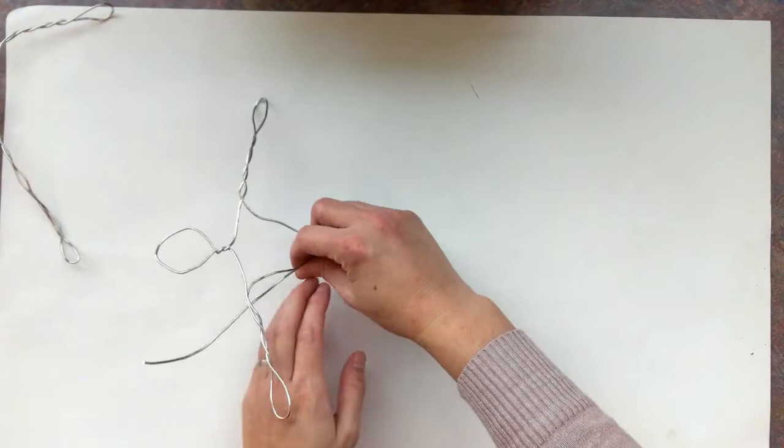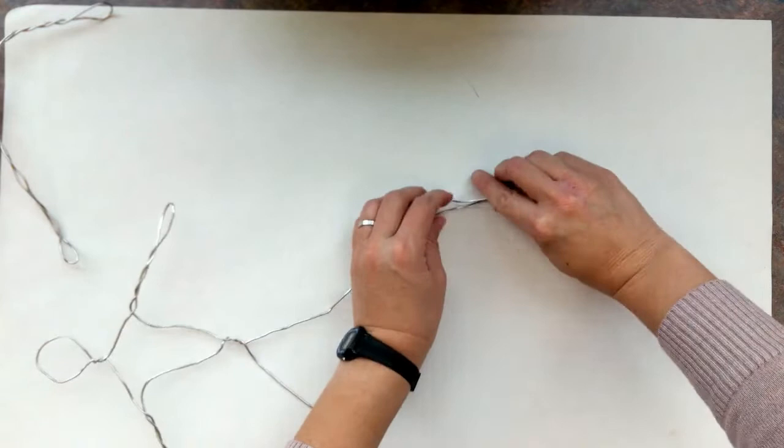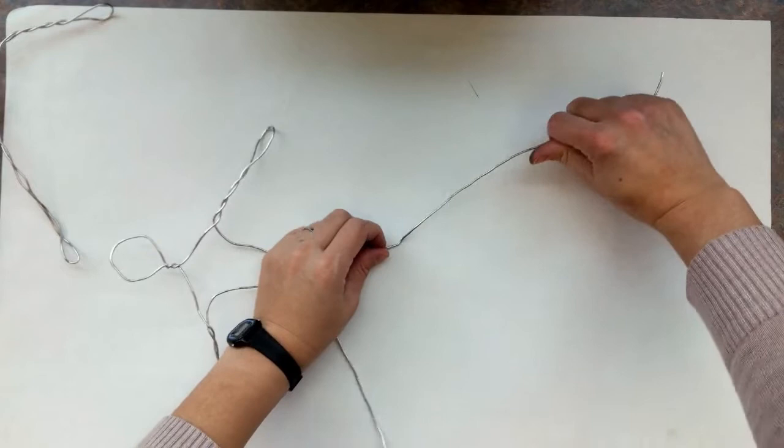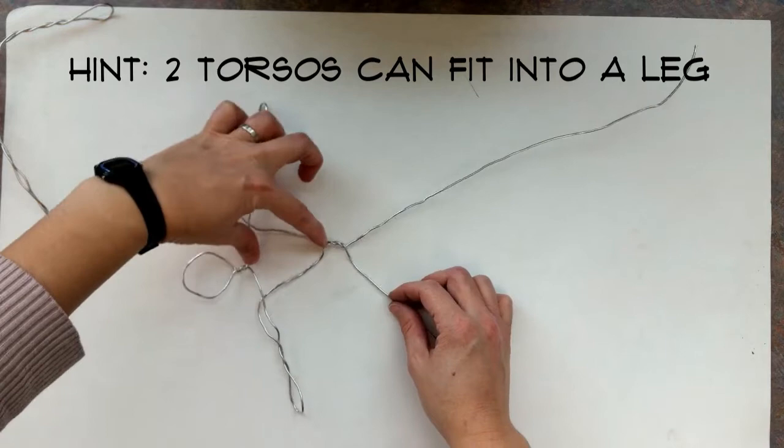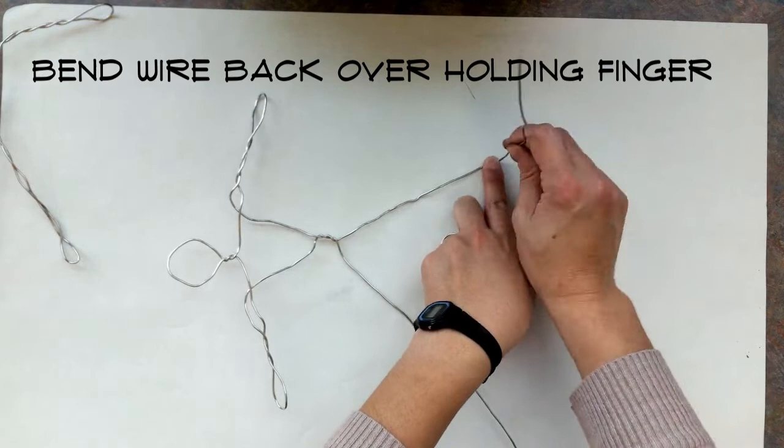And I also don't really want to bend it way down here, because then my leg is going to be way too long. So I'm going to find a good space. And if I do want to measure, here's my torso. One, two. So right about here, I'm going to bend it back on itself.